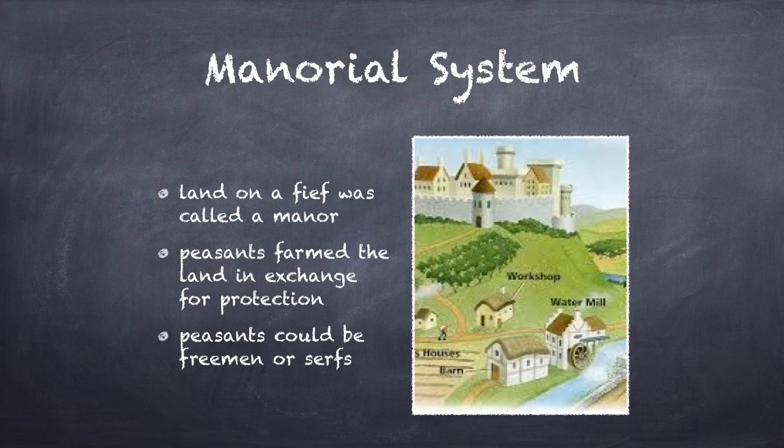Peasants fell into two groups. You had your freemen, who were people that were basically renting land from the owner and in exchange would give them some crops to pay rent. But then you had serfs, and serfs were the most important ones because serfs were bound to the land — they were like property, part of the manor. They had certain rules they had to follow: they couldn't get married without the permission of the owner, they could not move, and they could not own land.